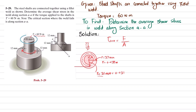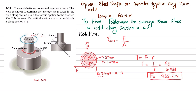This force — we know that torque is equal to force times radius, so F equals torque divided by radius. Torque is 60 newton-meters and radius is 0.031 meters, so when you calculate it you get force equals 1935.5 newtons. This is the shear force.